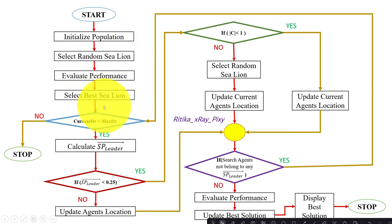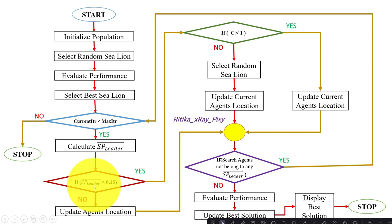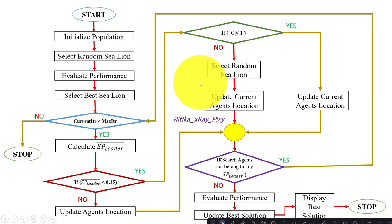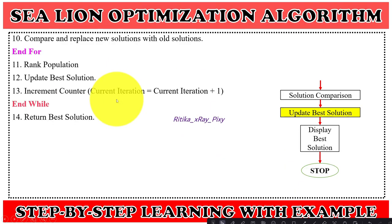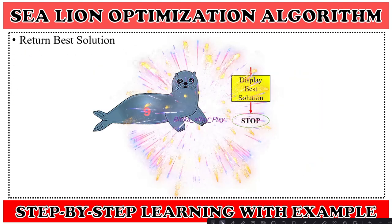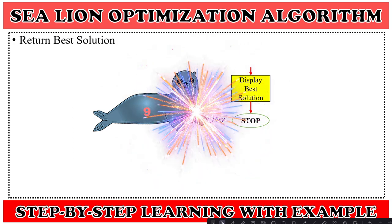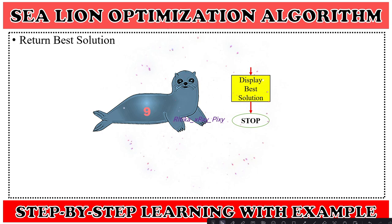In summary: initialize the population, evaluate performance, select the best, calculate the sea lion's sound, check if the sound is less than 0.5, perform exploration and exploitation, check the stopping condition, repeat the loop until stopping criteria is met, and when done, stop and display the best solution. That's all about this video. If you have any questions, you can comment below. Thanks for watching.